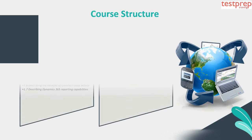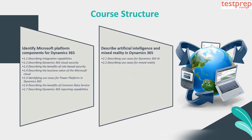Course Structure. Topic 1: Identify Microsoft Platform Components for Dynamics 365. This includes: 1. Describing Integration Capabilities. 2. Describing Dynamics 365 Cloud Security. 3. Describing the benefits of role-based security. 4. Describing the business value of the Microsoft Cloud. 5. Identifying use cases for Power Platform in Dynamics 365. 6. Describing the benefits of Common Data Service. 7. Describing Dynamics 365 Reporting Capabilities.